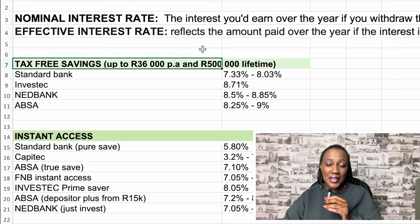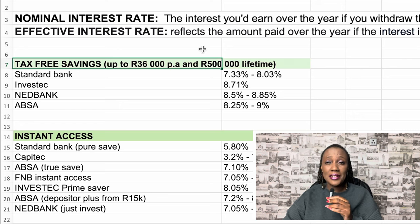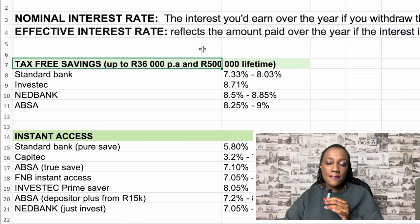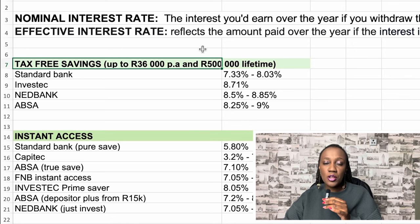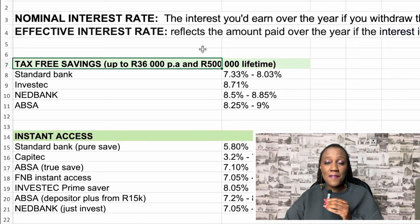The first account we're looking at is the tax-free savings account. On your interest income you're normally expected to pay tax, but 23,800 rands is exempt if you're still young — anything above that you start paying taxes. To encourage savings, they created this tax-free account where you can invest up to 36,000 rands per annum or 500,000 rands for your lifetime, and whatever interest you earn from it will not be taxed.